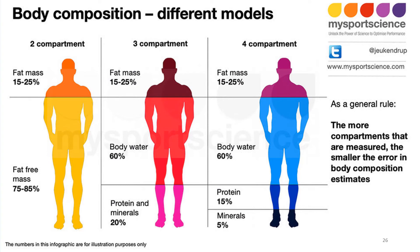This figure shows the difference in body composition across different models — from two-compartment to three-compartment to four-compartment. As a general rule, the more compartments that are measured, the smaller the error in body composition estimates, meaning a four-compartment model will have smaller error compared to a two-compartment model.